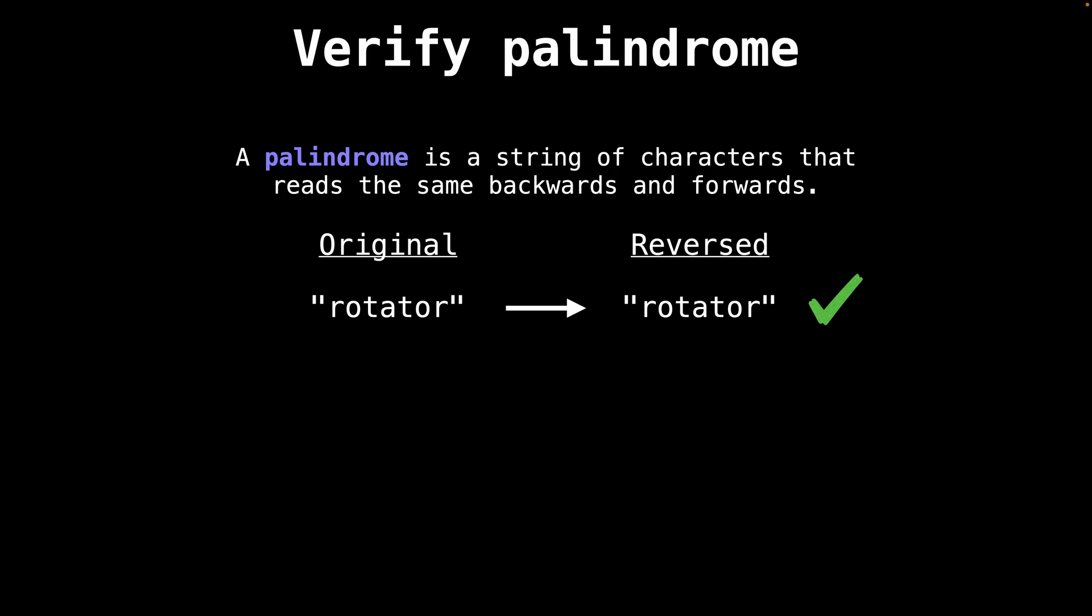For example, the word rotator is read the same whether you read it forwards or backwards. However, a string like raccoon is not a palindrome since reading the string backwards doesn't match the original string. And one more example, the string of numbers 1234321 is a palindrome because it reads the same backwards and forwards.